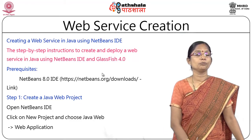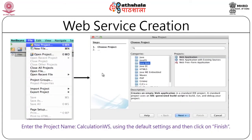To create a new project with a web application, click File and select New Project. From the categories, select Java Web and then Web Application on the right side. We are going to create a calculation web service using default settings, naming the project as CalculationWS.